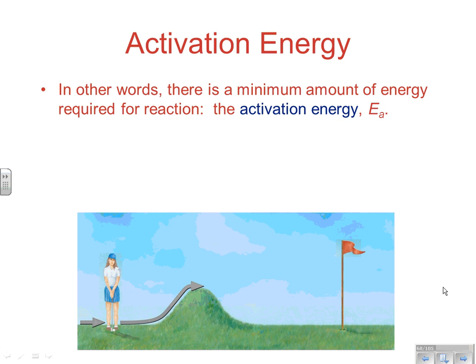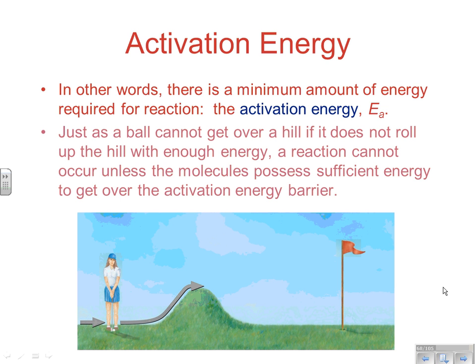In terms of energy, the key idea is activation energy, which you should recall from pre-AP chemistry. There's a minimum amount of energy needed for the reaction to occur because you have to break those bonds — if you don't have enough energy to break the bonds, the reaction won't occur. The symbol for activation energy is E sub A. Just as a ball cannot get over a hill without enough kinetic energy to cross the top, a reaction cannot occur unless the molecules possess sufficient energy to get over the activation energy barrier.